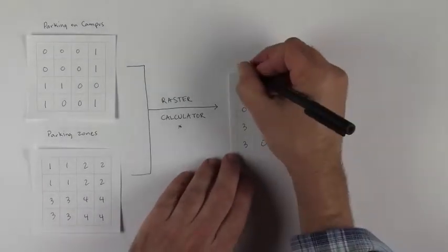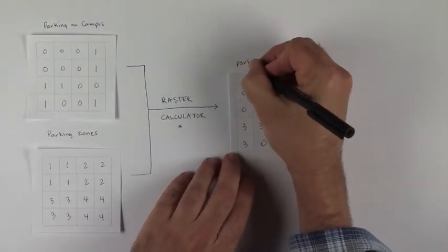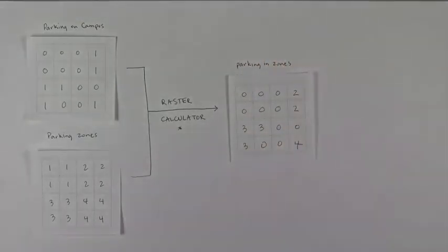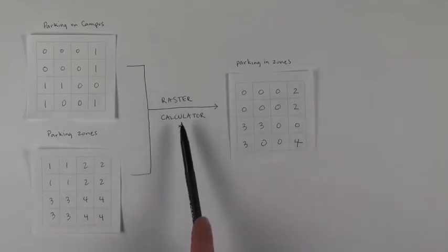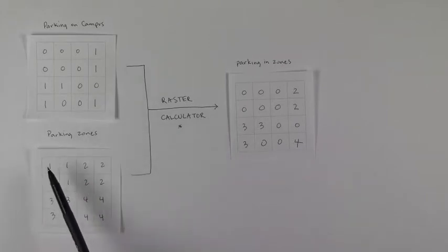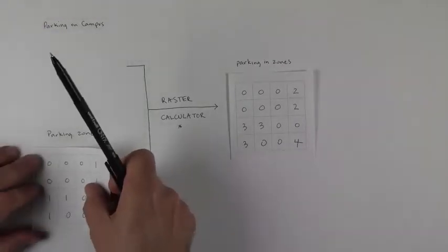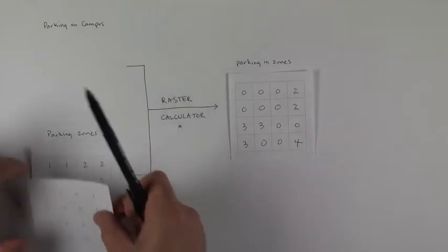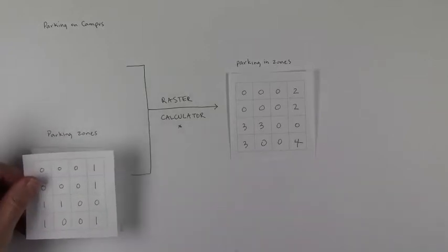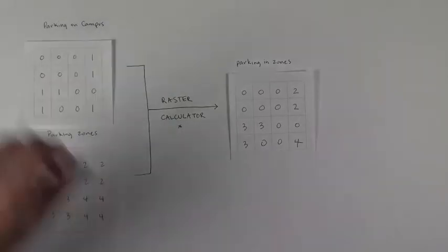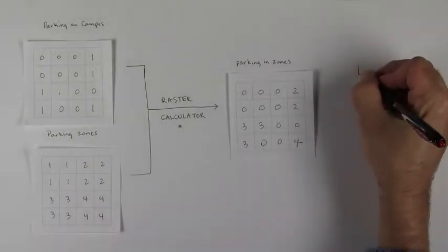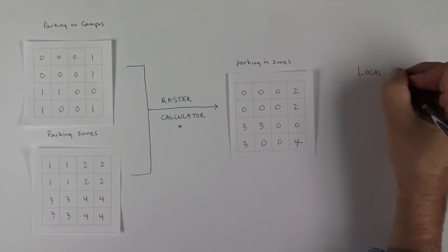So this is now parking in zones. And so because we're largely performing an operation on values that share a location, in the sense that they both have the same location, they're both from this cell, or that cell is being stored on separate layers, is that fair? So we usually call this a local operation.